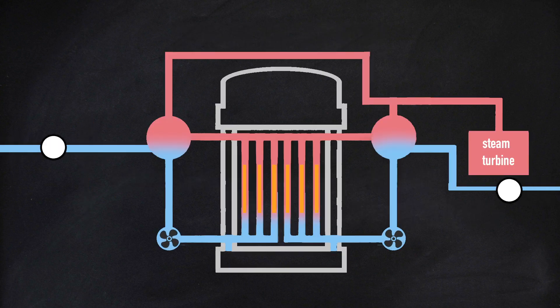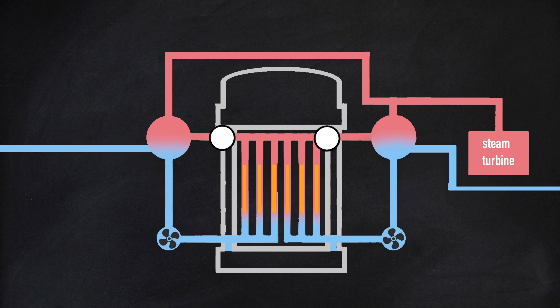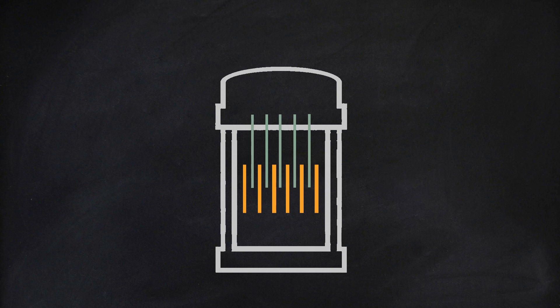This is inherently an unsafe design, and will factor into the tragedy that is soon to follow. In order to prevent the core from overheating, two methods are used. First, control rods are raised or lowered to control the power output of the core. When lowered, they absorb neutrons, which slow down the rate of reaction.